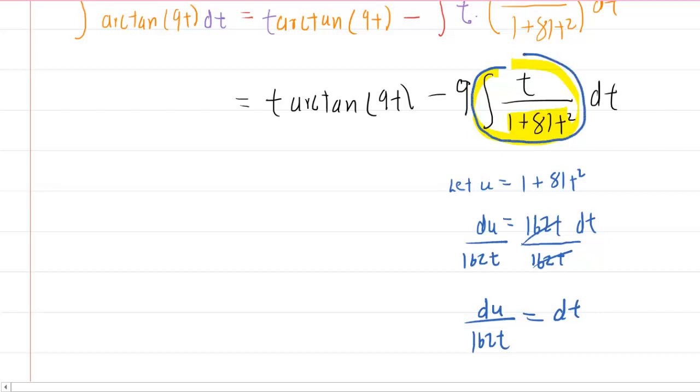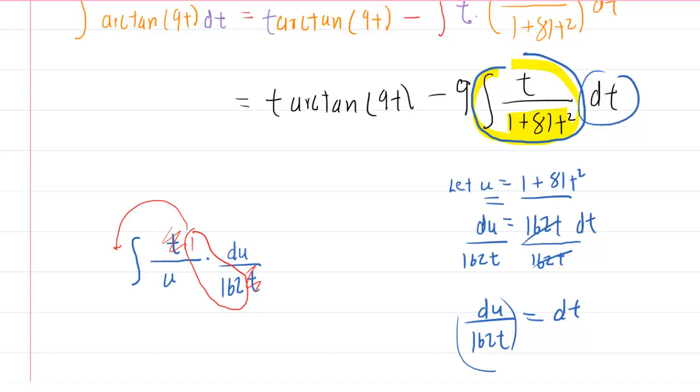And then once I have my dt solved for, I like to resubstitute it into the expression. We're integrating this expression right now. We'll have the integral of t over u times the dt, which was this expression. What's nice about solving for dt is typically variables will cancel. The t's are going to cancel out. We can factor out a 1 over 162. So, we'll have 1 over 162 integral of 1 over u du.